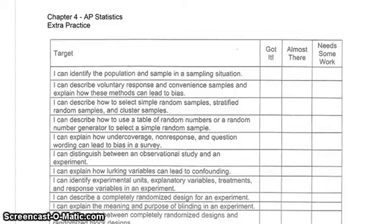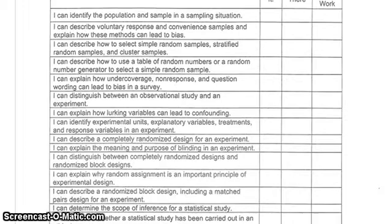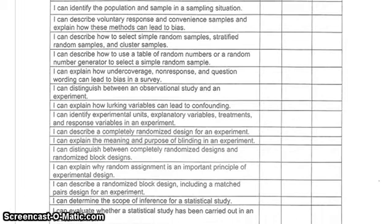Welcome to AP Statistics Chapter 4 Extra Practice and Test Review. The first thing we want to look at is what do we know. Here is a list targeting things we should know. You can say 'got it,' 'almost there,' or 'needs some work.' You can freeze this, look at them, and see if you know this.